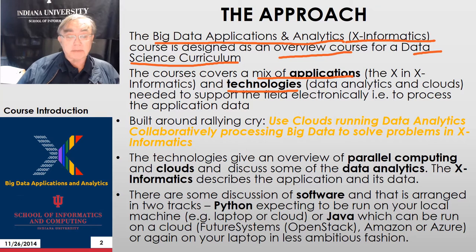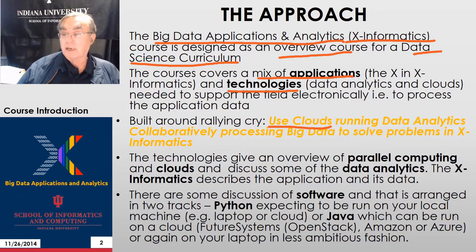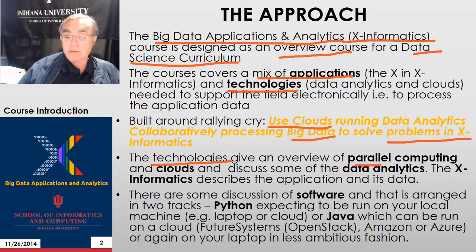These are the technologies of the Big Data Revolution, which are needed to support any given field X electronically. We have a rallying cry: we're using clouds, running data analytics, doing collaborative delivery, processing big data, and solving problems in X-Informatics. In the technology area, we go through parallel computing, clouds, and some aspects of data analytics such as visualization and clustering. The X-Informatics section describes various applications in that data.